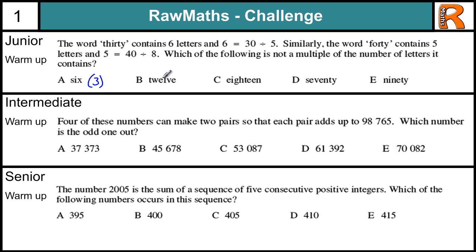'Twelve' has 1, 2, 3, 4, 5, 6 letters and 12 is a multiple of 6. 'Eighteen' has 1, 2, 3, 4, 5, 6, 7, 8 letters, but 18 is not a multiple of 8. So once we've got there we can stop and our answer is C. We could do the other two but there's no need.